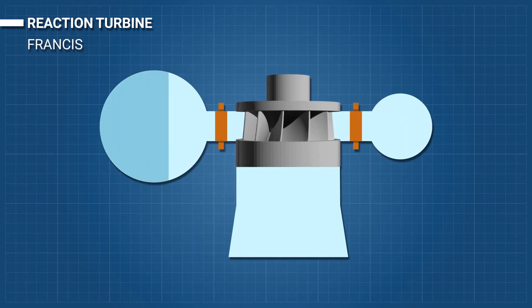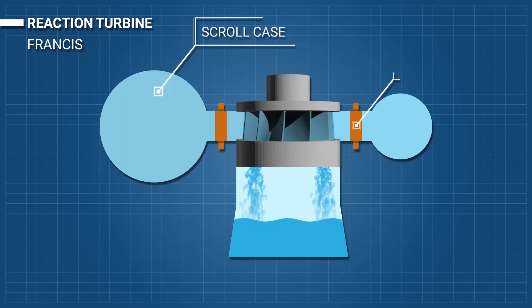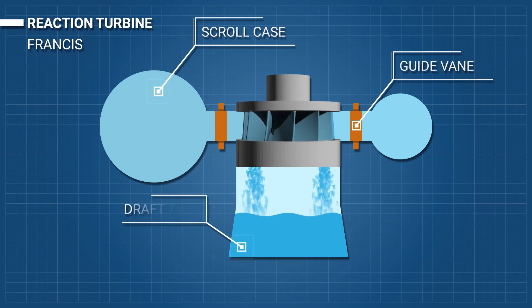Francis: A Francis turbine has a runner with fixed buckets or vanes, usually nine or more. Water enters just above the runner and all around it, and then falls through, causing it to spin. Besides the runner, the other major components are the scroll case, guide vane, and draft tube.